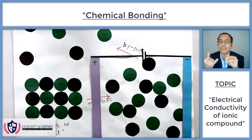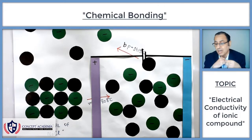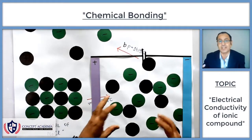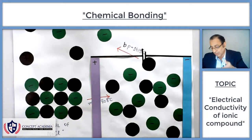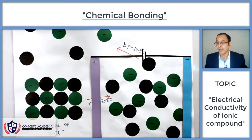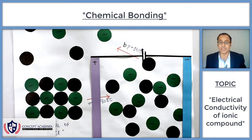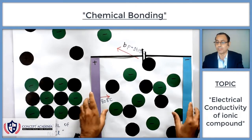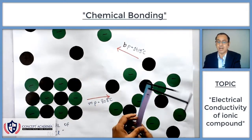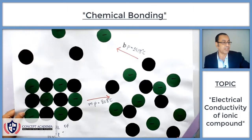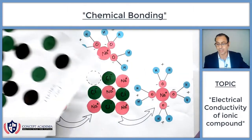Electricity can be conducted if there are ions and they can move. Similarly, when we dissolve an ionic compound in water — in the aqueous form — the ions are free and they are free to move.